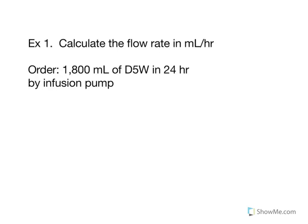Example 1: Calculate the flow rate in milliliters per hour. Our order is for 1800 milliliters of D5W in 24 hours. If you're not familiar with the abbreviation D5W, which is 5% dextrose in water, please see the table on page 499 for those abbreviations.